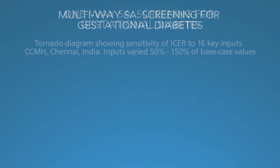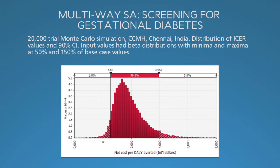Multi-way sensitivity analyses are the perfect way to summarize the aggregate effect of uncertainty in all inputs. A Monte Carlo simulation, as shown here, calculates the distribution of results from many iterations of the model — in this example, 20,000 iterations. The histogram shows the frequency of narrow ranges of results, indicating that the most common result is very similar to the base case of $1,640, with 90% of the simulations between $400 and $4,000.